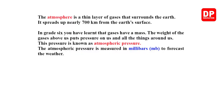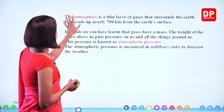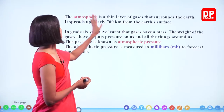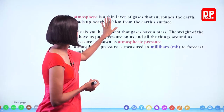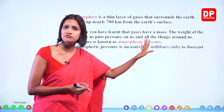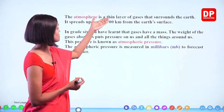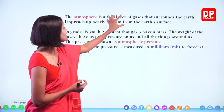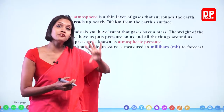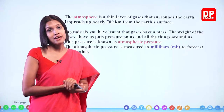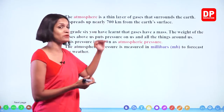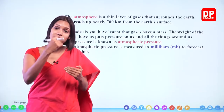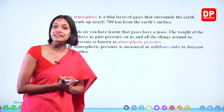So what is this atmosphere? The atmosphere is a thin layer of gases that surrounds the earth. It spreads up nearly 700 kilometers from the earth's surface. When we say 'thin layer,' it is thin compared to the size of the earth — 700 kilometers is not so thin by itself, but compared to the depth of the earth, it is a thin layer.